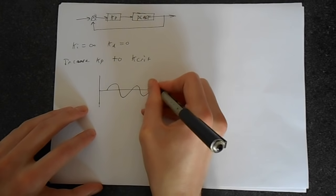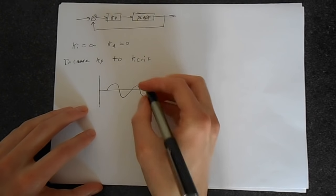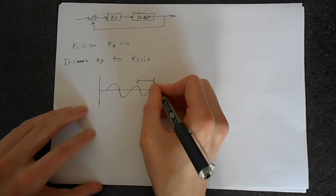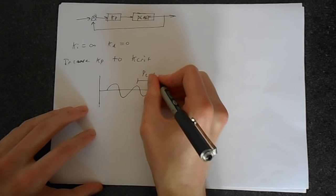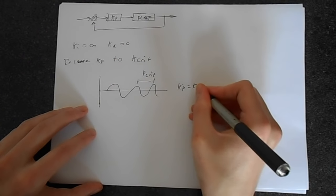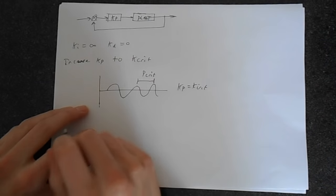And you'll get a response that looks something like this at K equals kcrit. Something like this. It's just started to be unstable. And you'll get this thing here, pcrit. And this is KP equals kcrit. This is critical.